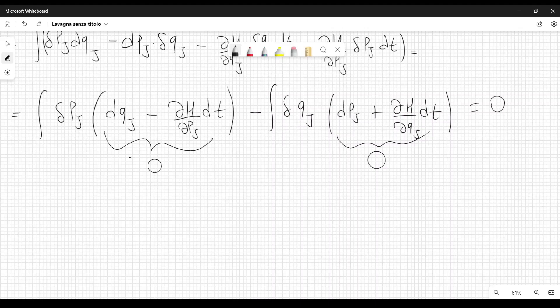So from here we get dq j equal to dH over dp j dt. And if we divide both sides by dt, we get q dot j here. And from here we get p dot j equal to minus dH over dq j.